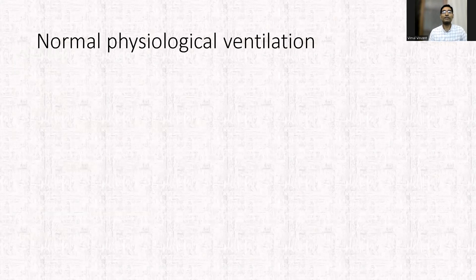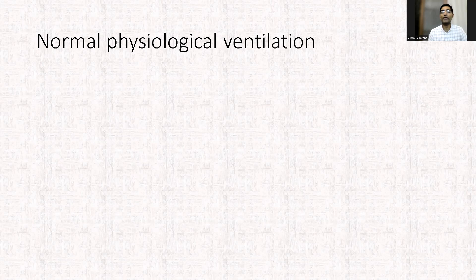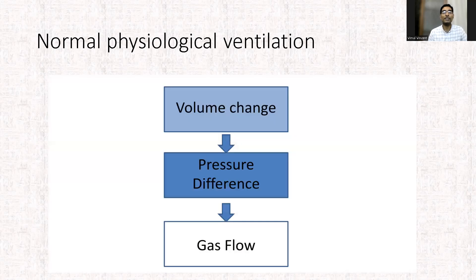Normal physiological ventilation, as you all know, is negative pressure ventilation. In ventilation, the most important aspect is the creation of a pressure gradient. You have to have a difference in pressure, which leads to a flow of air. In negative pressure ventilation, the first thing that happens is the volume change, which causes a pressure difference, which causes the gas to flow into the lungs and out of the lungs.